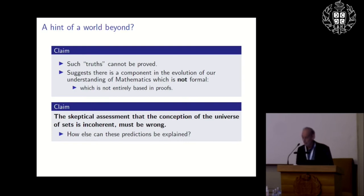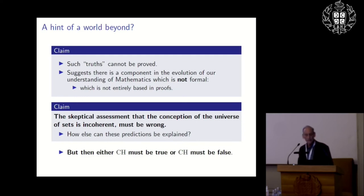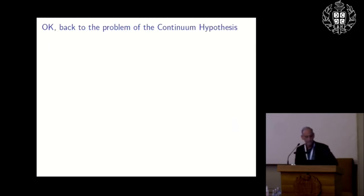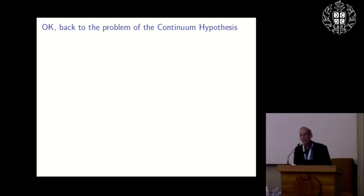But the skeptic can turn the tables: if the conception of the universe of sets is judged coherent enough to justify predictions about very big sets, it must have full information about small sets too — and the continuum hypothesis is a statement about very small sets. So we have to go back to the continuum hypothesis. What is the resolution? Is CH true or false? Perhaps we should begin by trying to more deeply understand the problem.